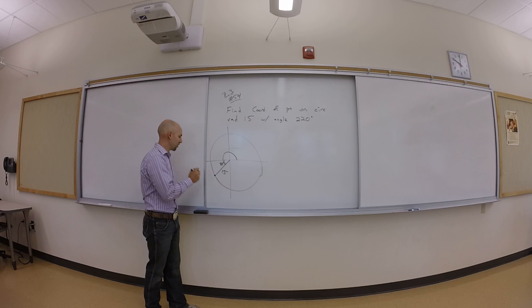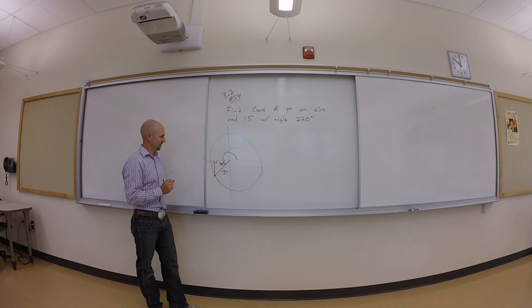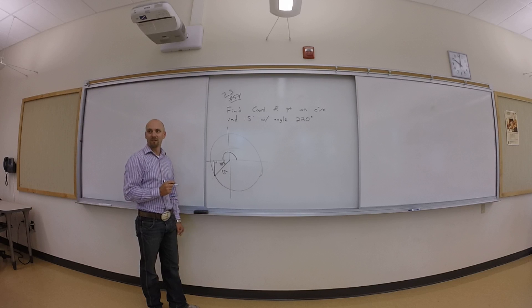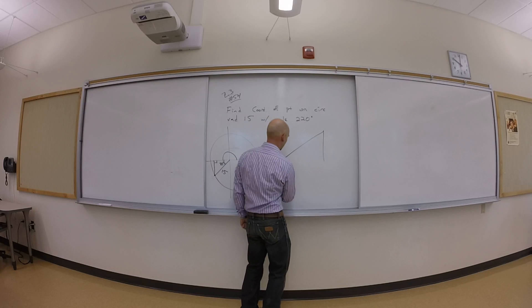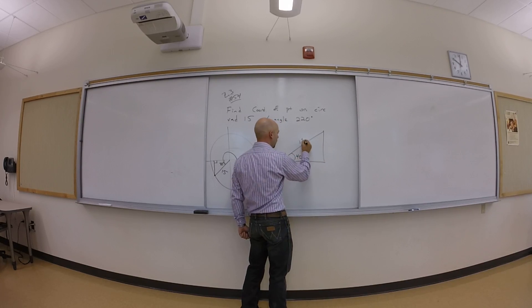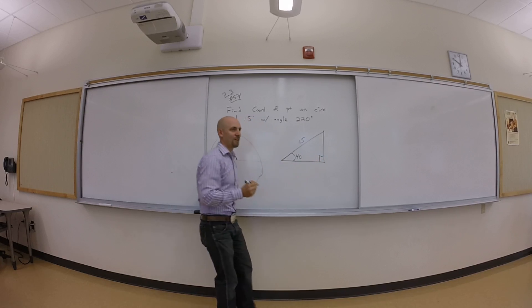Draw a triangle. Draw a triangle? Okay. There's a triangle. So if I kind of pull that triangle up, flip it over in my brain, I've got 40 degrees, 15 is the hypotenuse, which is probably a right triangle.